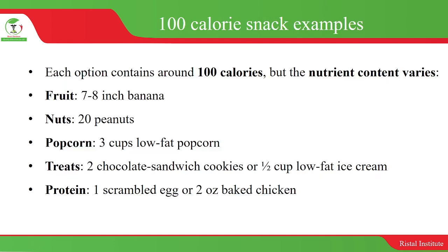Let's look at some examples of 100 calorie snacks. Each option contains around 100 calories, but the nutrient content varies. We are looking at the calories — the amount of energy contained in the food item — and we have not looked at the proteins, the carbohydrates, or the fats and micronutrients.